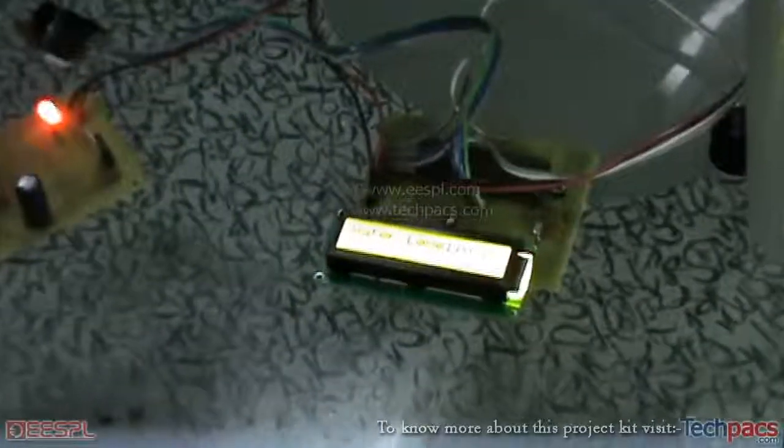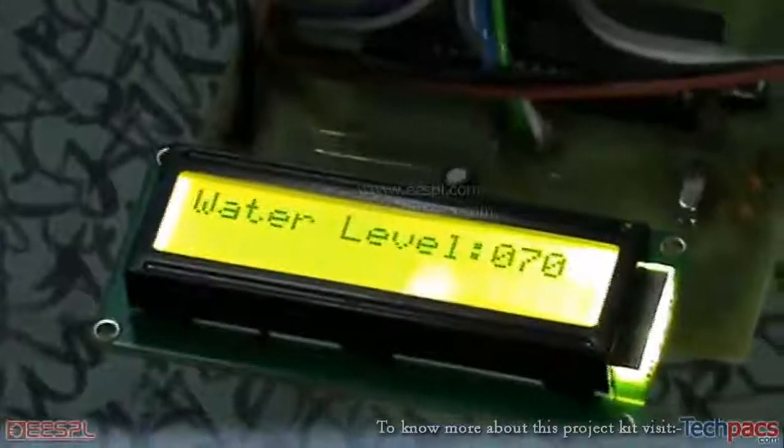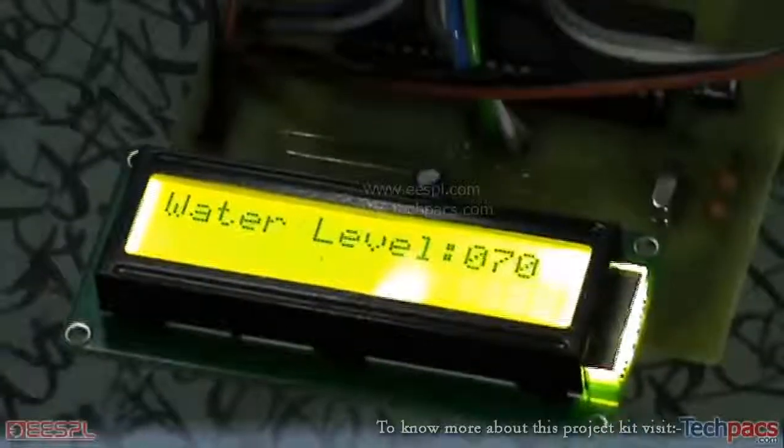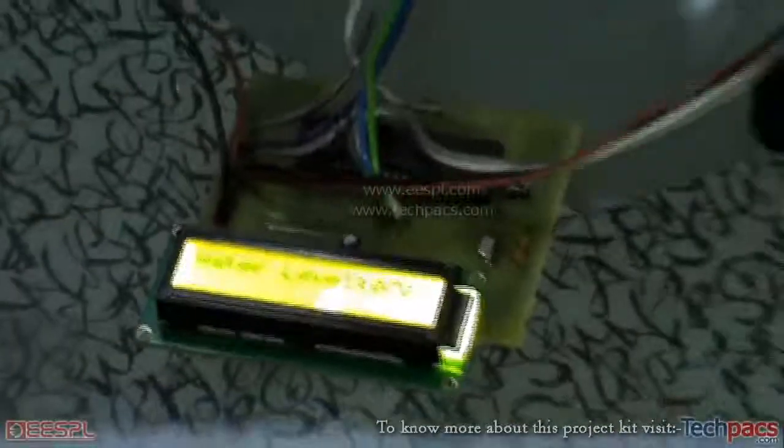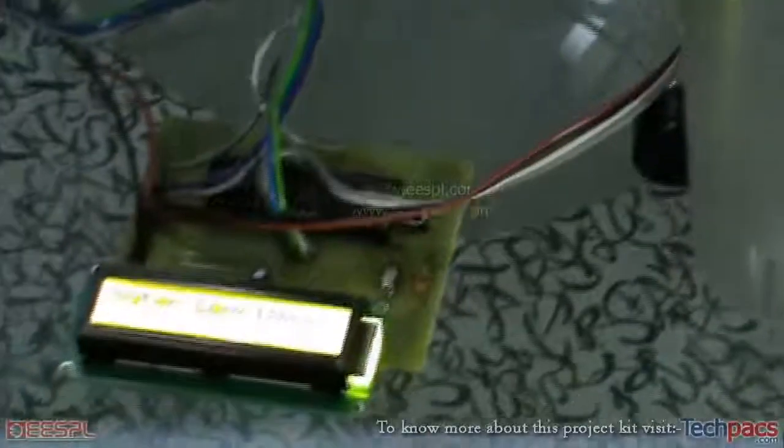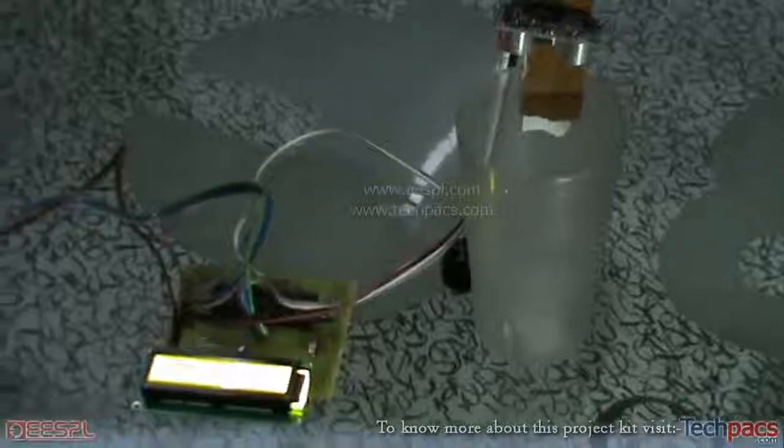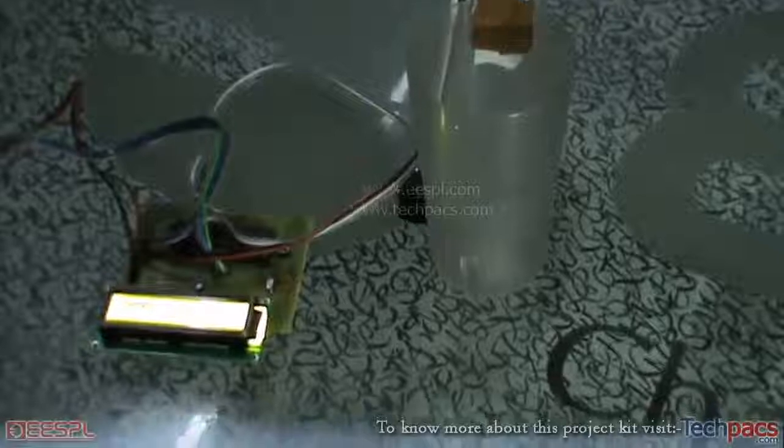In case it reaches a certain level, as it has been set to 80 right now, it will give an alert. So it can be used near the river banks or the dam areas, or wherever the water level reaches the maximum limit should give an alert. So let us see.